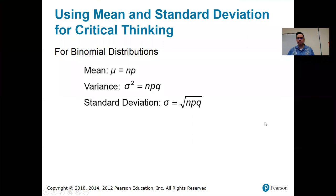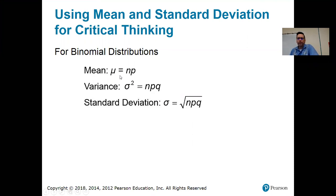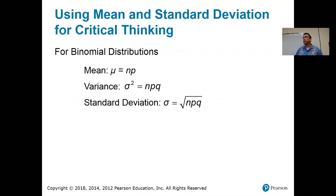That brings us to finding the mean and the standard deviation of a binomial random variable. The mean of a binomial random variable, using notation mu and sigma, is simply n times p. That makes a lot of sense — if you think back to the pop quiz example with 10 questions where everyone guessed and had a 25% chance of getting each right, the average score would be 2.5 out of 10, because 25% of 10 is 2.5.